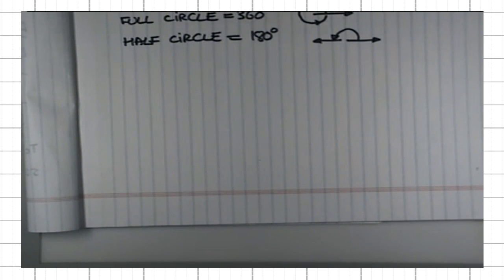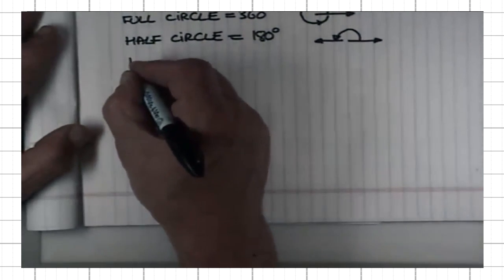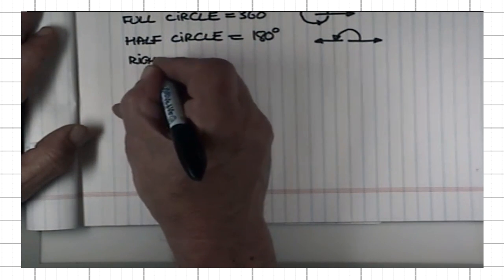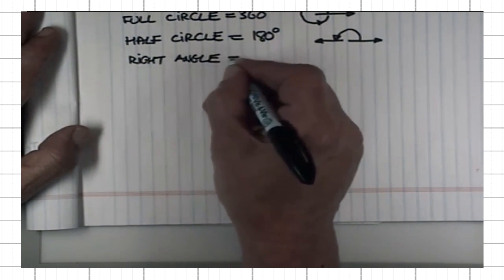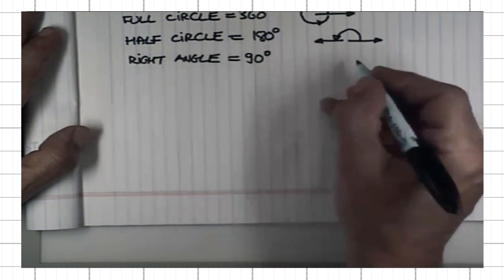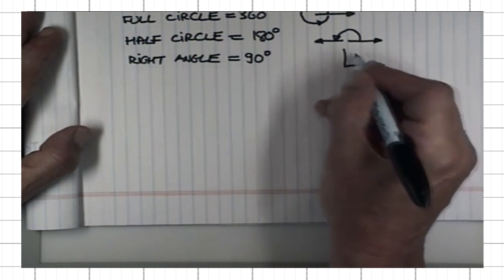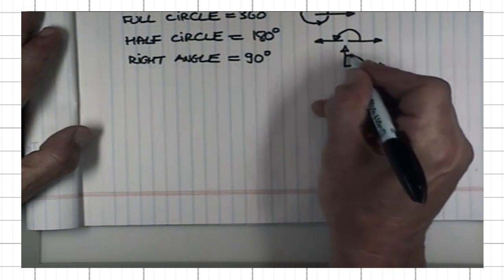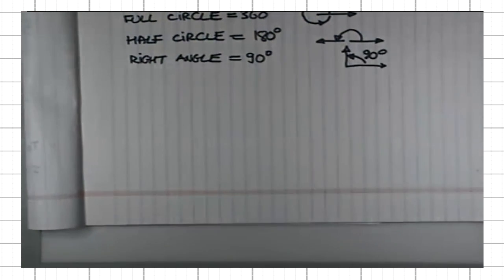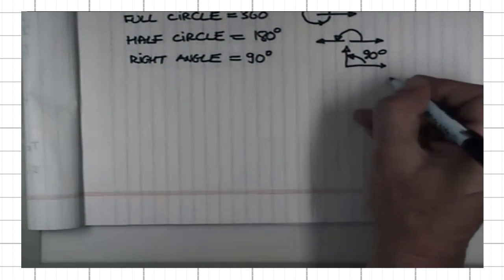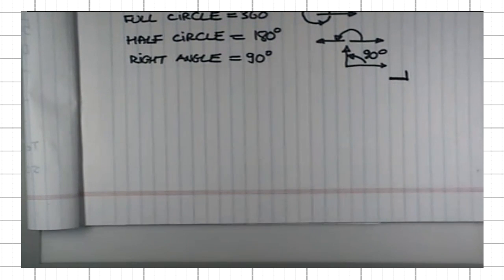Right angle is 90 degrees, and so on. In time, we will be dealing with the smaller units of angle.